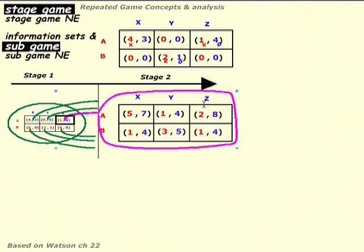If these are the payoffs and we've played A and Z in the first round, what are the players' best responses? Well, 5 is better than 1, 3 is better than 1, 2 is better than 1, 8 is better than 7, 5 is better than 4 — and it's exactly the same pattern of best responses as we had in the stage game. That makes sense: all we've done is add the same number to every red number and the same number to every blue number, so the relative sizes don't change.